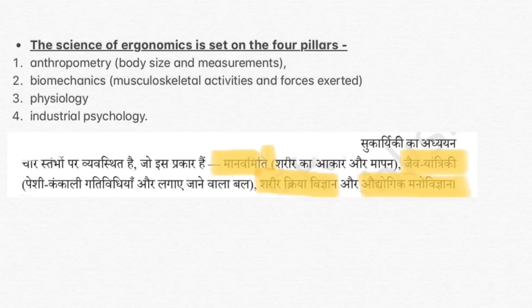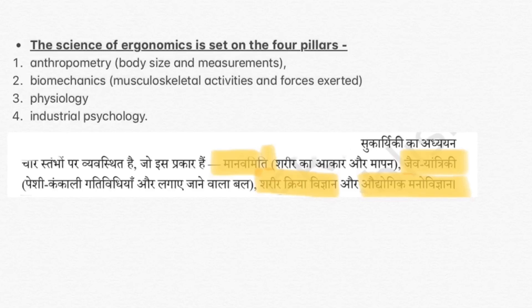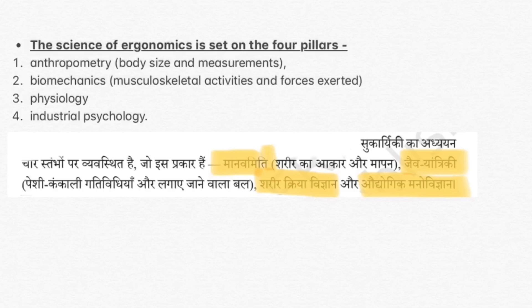The science of ergonomics is set on four pillars. It depends on four things which help to achieve the maximum in work. First is Anthropometry — body size and measurements. Second is Biomechanics — which talks about musculoskeletal activities and forces exerted. Third is Physiology of your body. Fourth is Industrial Psychology — what kind of psychology the industry has, or under which circumstances you are working.